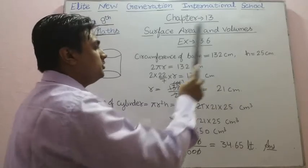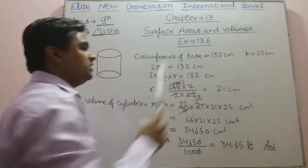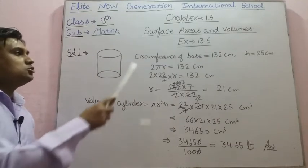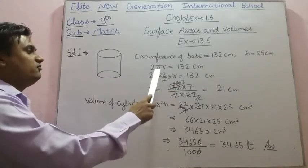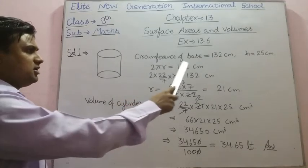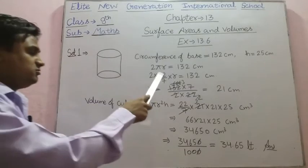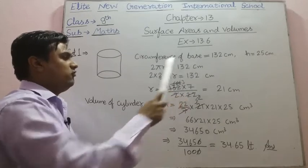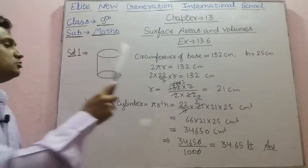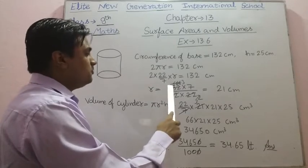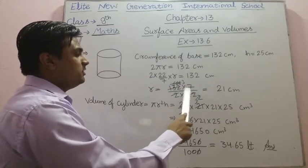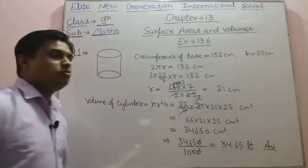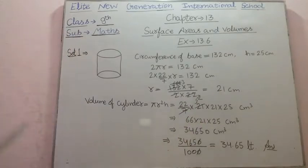We have to find how many liters of water it can hold, where 1000 centimeter cube equals 1 liter. The circumference of the base means the circumference of the circular base, so the formula for circumference of a circle is 2πr. So 2πr equals 132 centimeter. Putting the value of π: 2 × (22/7) × r = 132, so r = (132 × 7) / (2 × 22), which gives radius equal to 21 centimeter.